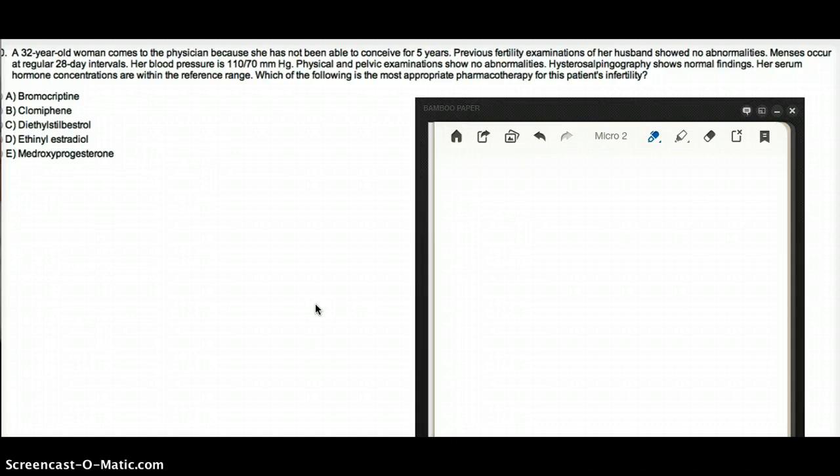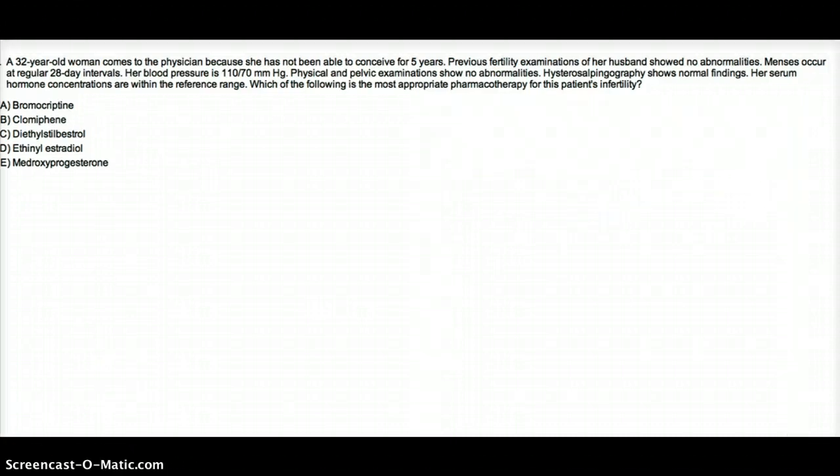Which of the following is the most appropriate pharmacotherapy for this patient's infertility? In this question, the patient's husband is fine because the fertility testing shows the husband has no abnormalities, but she hasn't been able to conceive for five years. She's only 32.